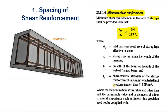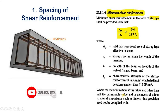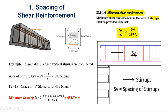This means if the maximum shear stress τv is less than 0.5 times the permissible value τc, then there is no need to provide shear reinforcement in the case of minor structural elements such as lintel beams. Now by using this formula we will find the spacing of stirrups SV.